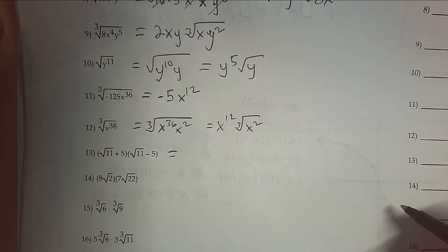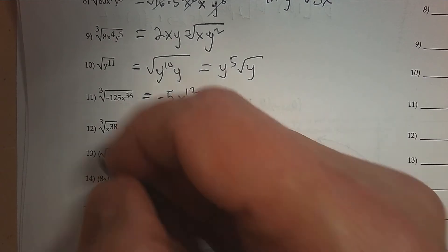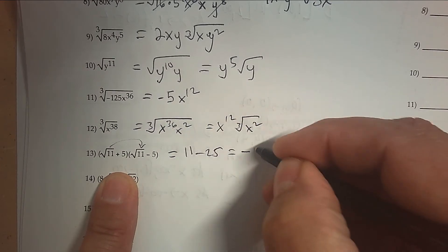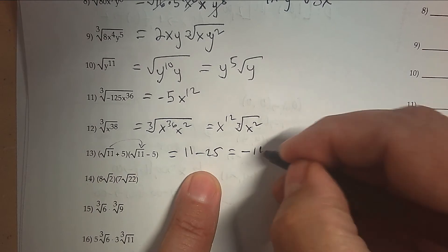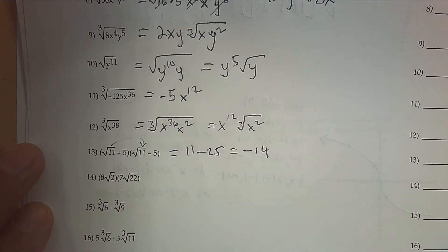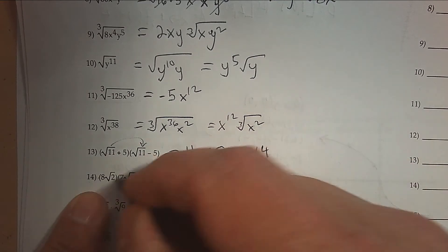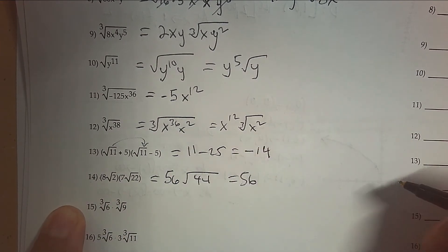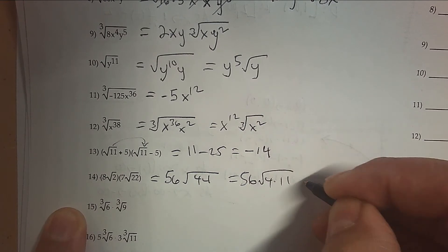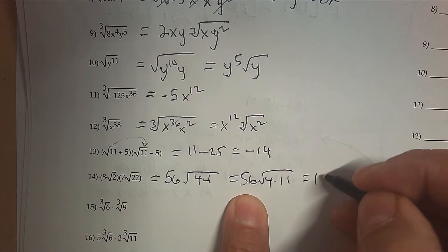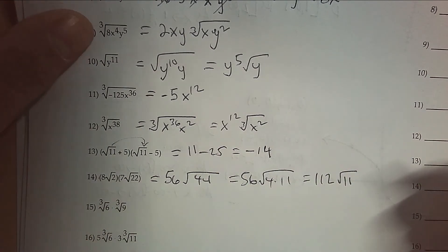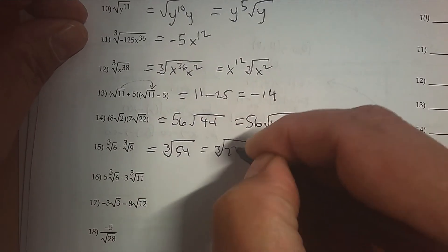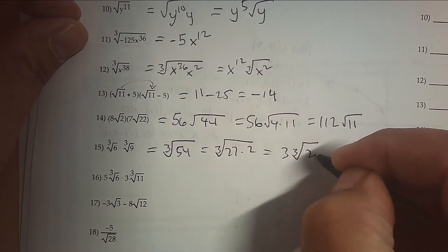Here we're going to do some foiling. Recognize this is a difference of squares, so I just need to go first times first — that's 11 — and then last times last is −25. So when I put it together, I get −14. Here, 8 times 7 is 56. And then 2 times √22 — well, 44 is 4 times 11, so the square root of 4 is 2. So 2 times 56 is 112, and what's left over is √11. Cube root times cube root — we multiply the insides together. And then to simplify that, that's 27 times 2, so the answer is 3 and the cube root of 2.